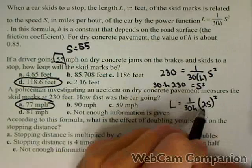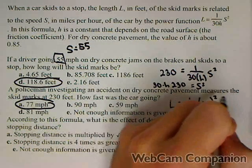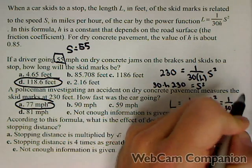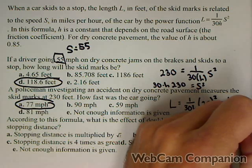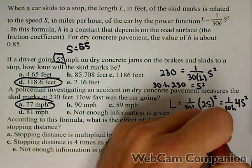Well because it gets squared, what's going to happen is that's going to become a 4s squared. So we'll have 1 over 30h times 4s squared.